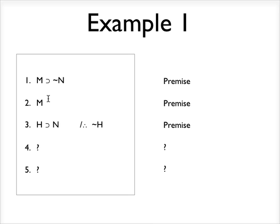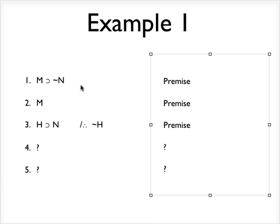We just have M. So what immediately strikes me is lines one and two. Lines one and two here, the first two premises. I have a conditional statement on this line. And then on line two, I have the antecedent of the conditional statement.